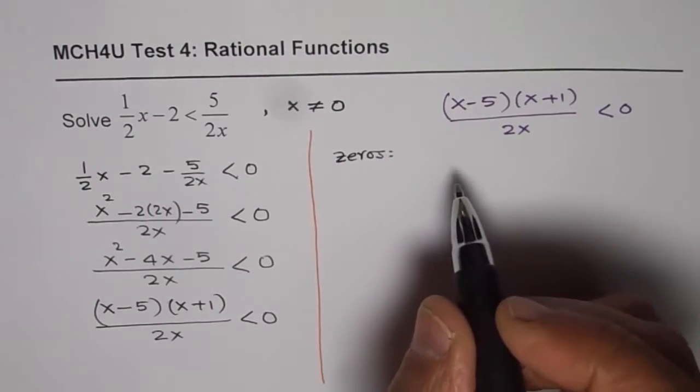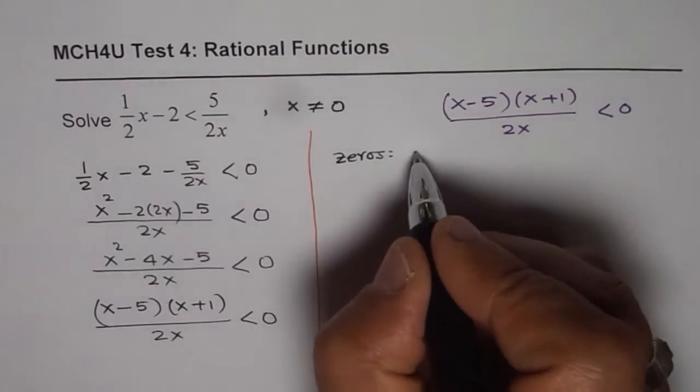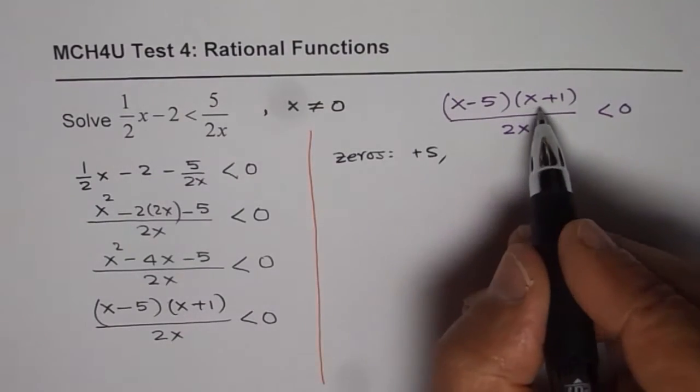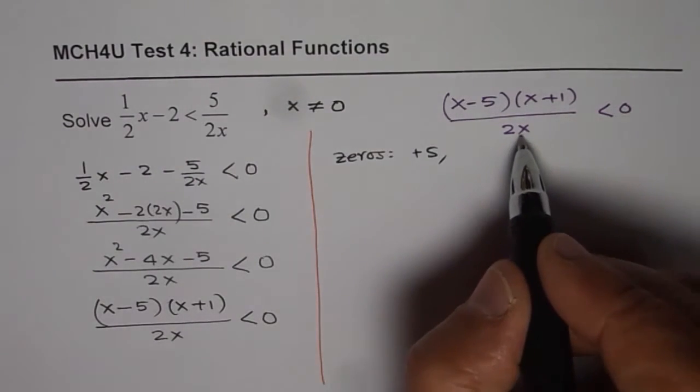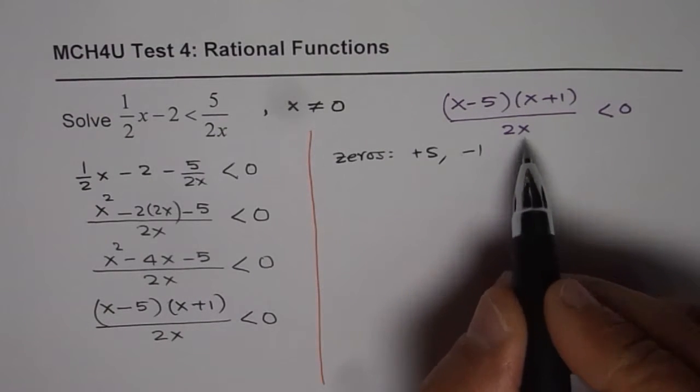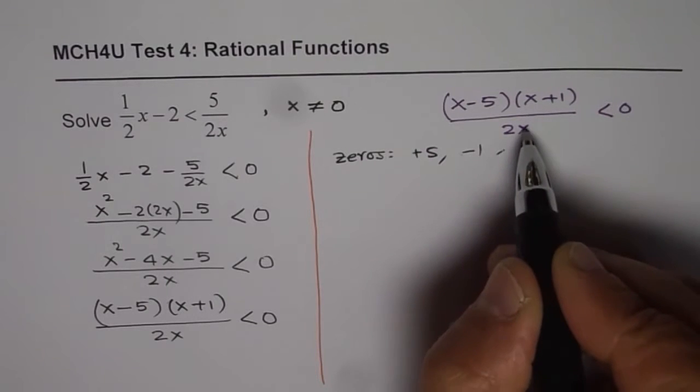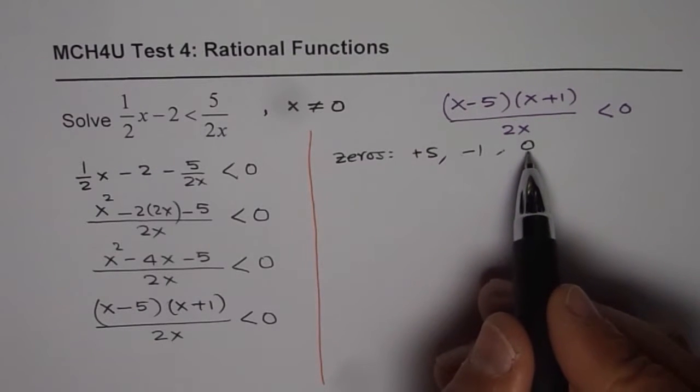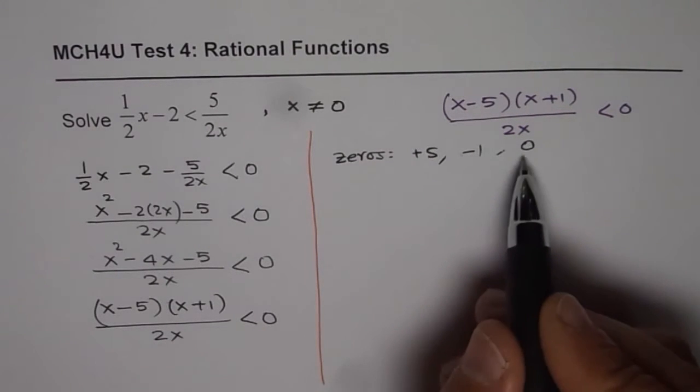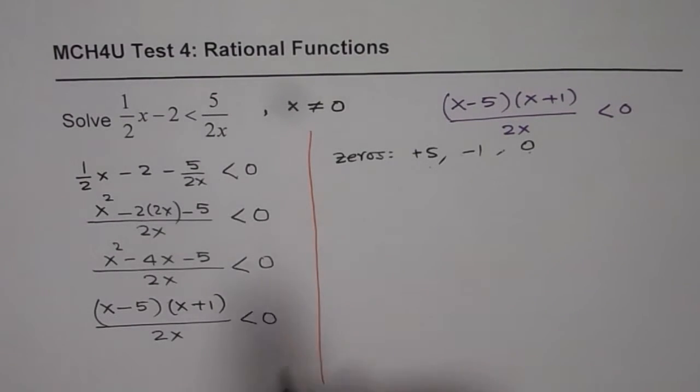Zeros are at plus 5 and then we have at minus 1 and this is asymptote at 0. So, at 0 we have an asymptote. These are the discontinuities of our function. This is the discontinuity, these are the zeros.